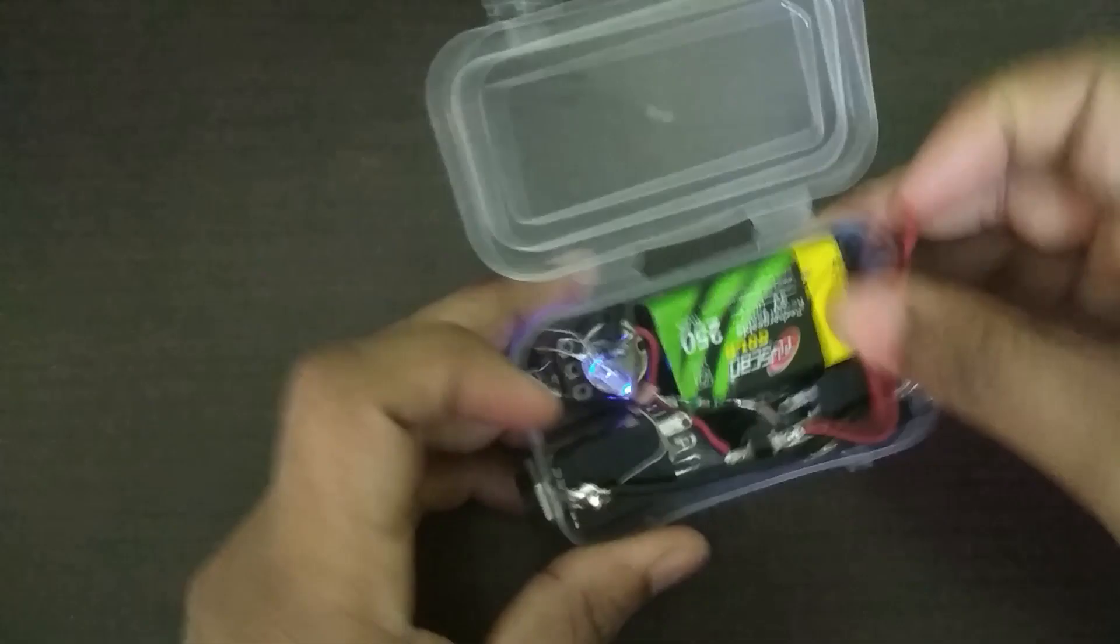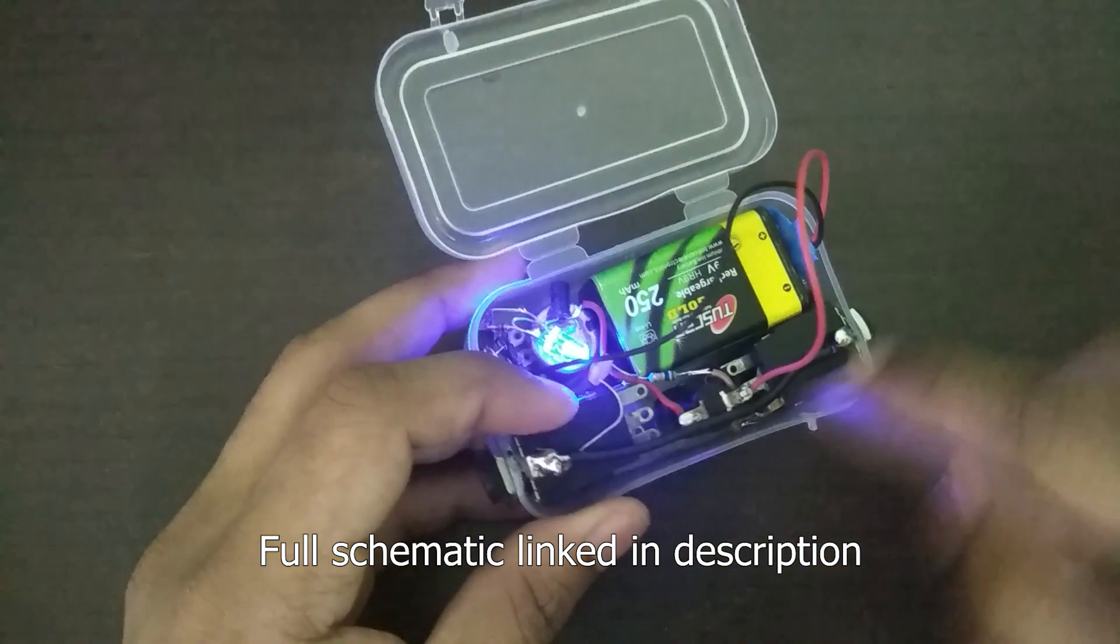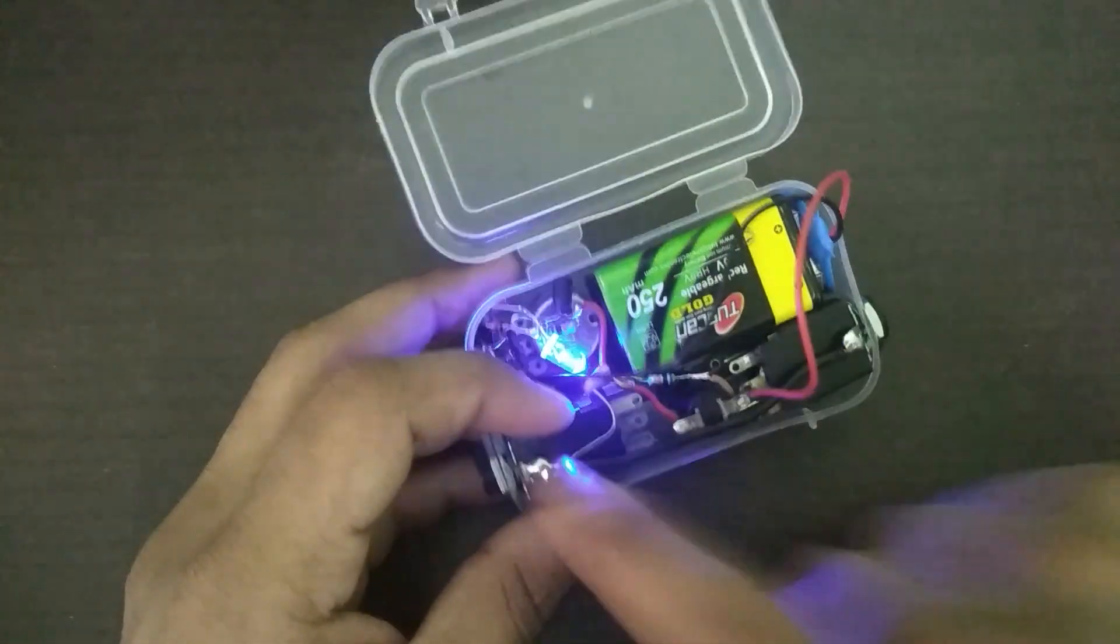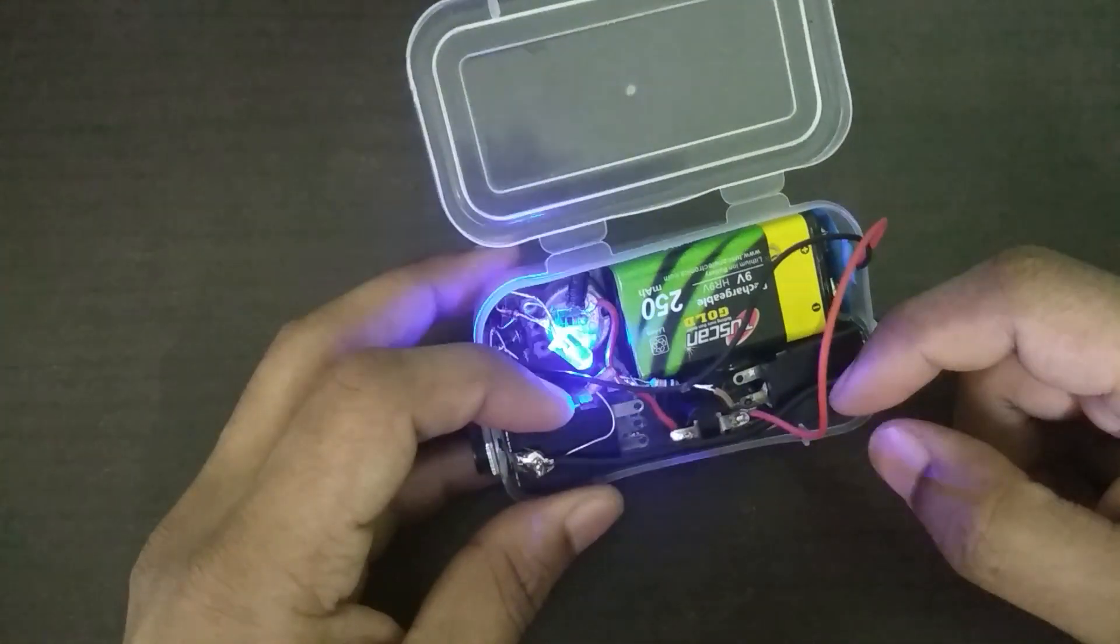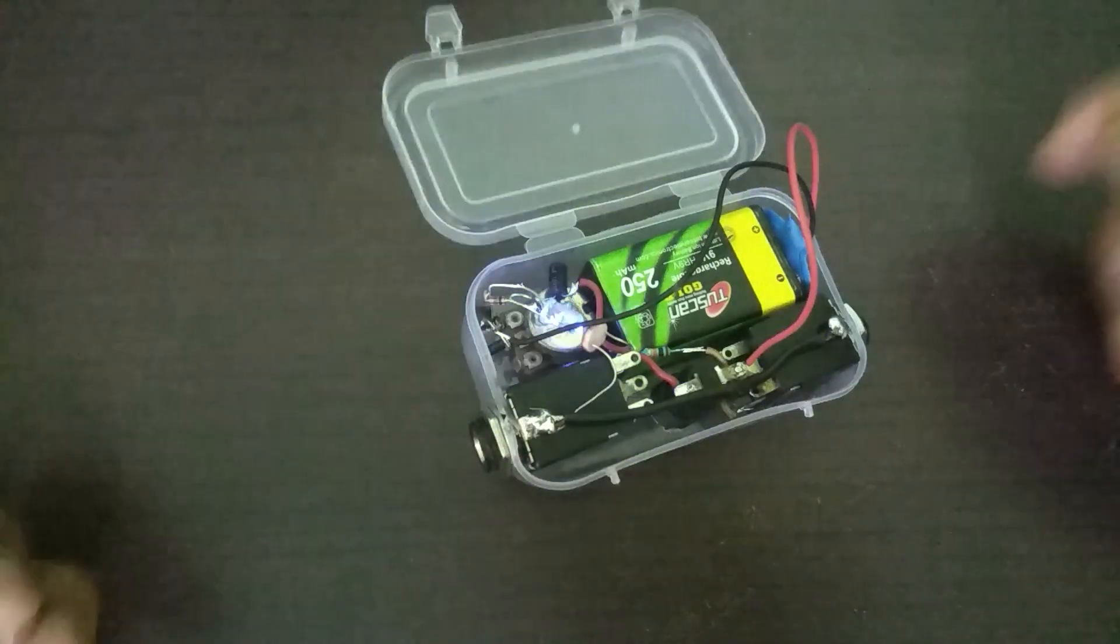And then the input and output are just really simple. It's just connected. The grounds are connected together. Input is connected. Sorry, that's the input. The input is connected to the output directly through a 10k resistor there. And then this LDR is just connected across the output.